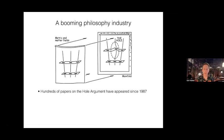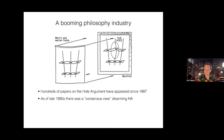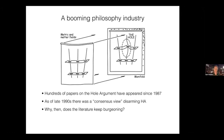Hundreds of papers have appeared on the hole argument since 1987, and at least as of the late 90s, there started to be something referred to as a consensus view of how to disarm the hole argument. And yet, despite some people talking about a consensus view, the literature didn't ever stop, and in fact in the most recent decade has burgeoned even more. I'll be talking about some of the reasons behind this, and also what the consensus view amounts to the way I think we should understand it.